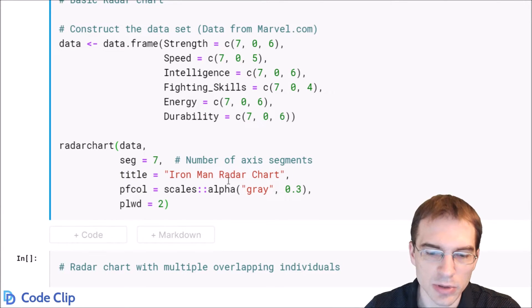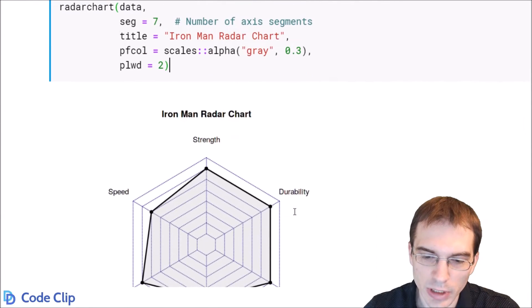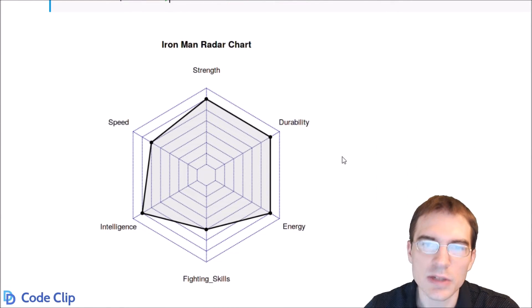Let's run this and look at what the result is. So let's scroll down and we can see we have successfully created a radar chart here with the statistics for Iron Man from Marvel's website.